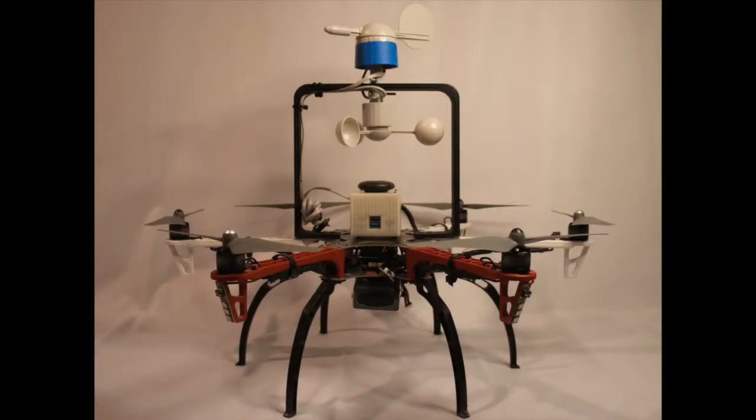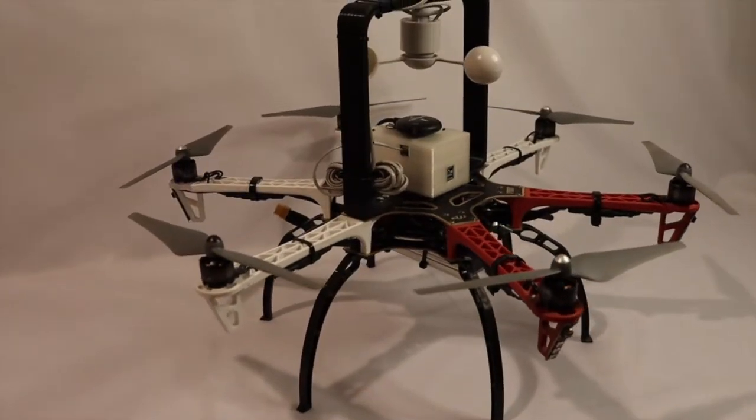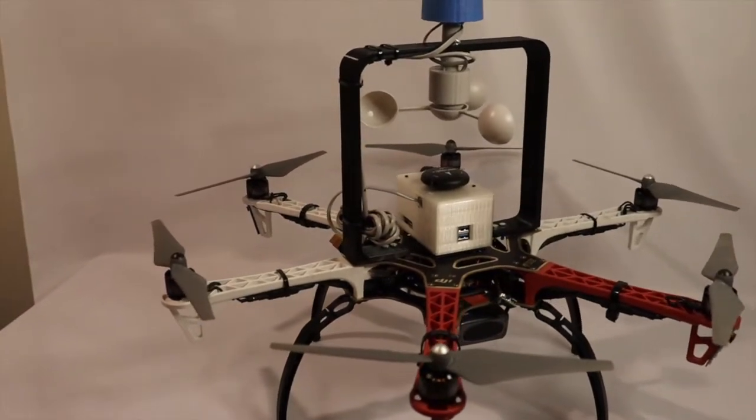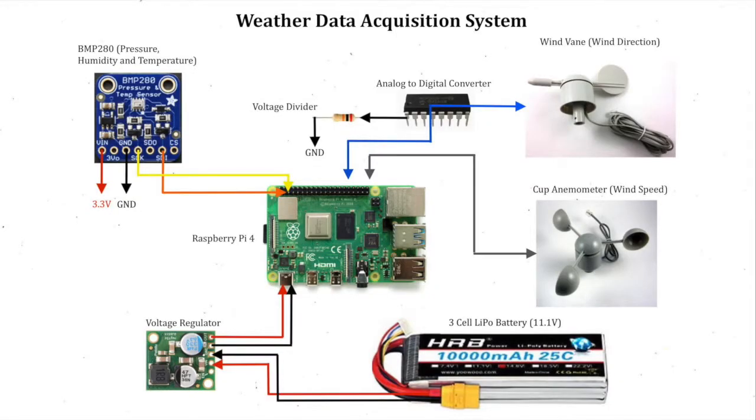The drone has two main systems: the Weather Data Acquisition System and the Platform or Drone System. These systems are connected only by a shared power source and a passive serial communication line. The Weather Data Acquisition System is responsible for collecting and recording weather data during the drone's flight.